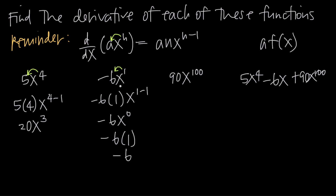So negative 6 is the derivative of negative 6x. As a shortcut, whenever we have a constant coefficient multiplied by x to the 1st, or just x, the derivative is always just going to be the constant coefficient. The x drops away and the derivative is whatever the coefficient is. So we can just say the derivative of negative 6x is obviously negative 6.